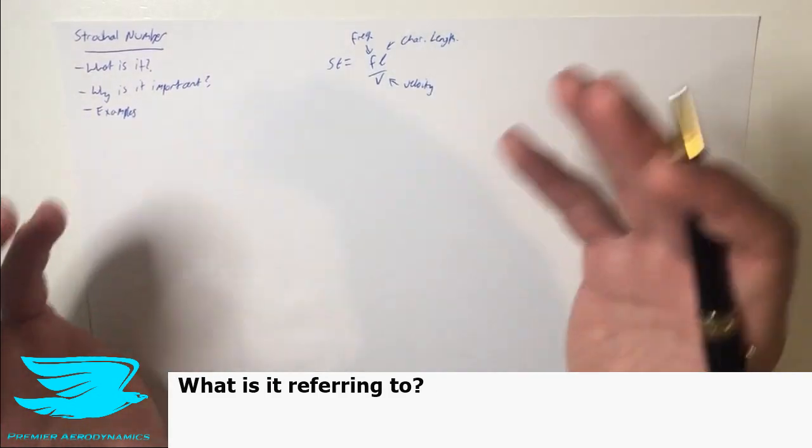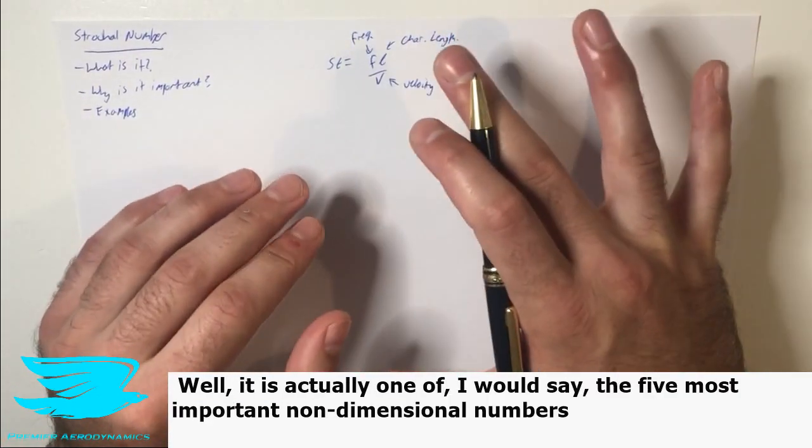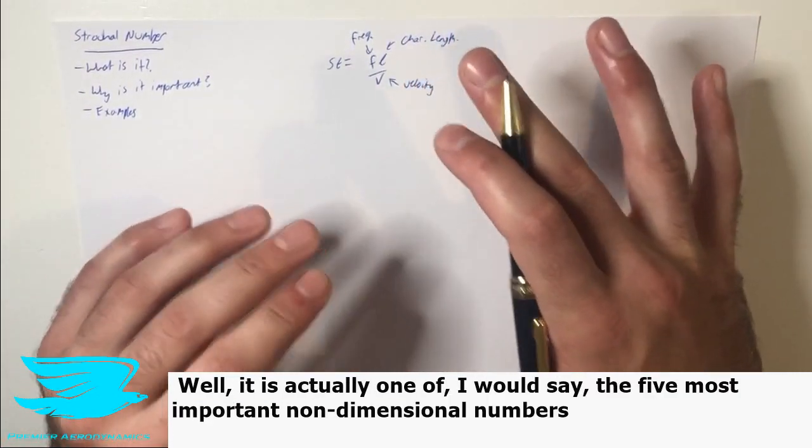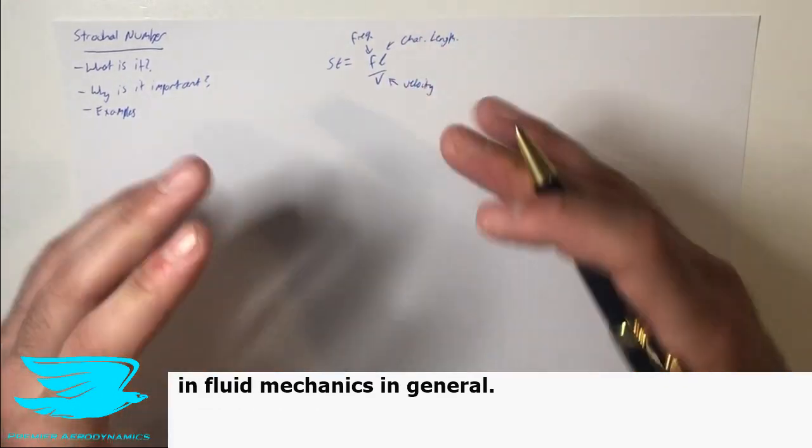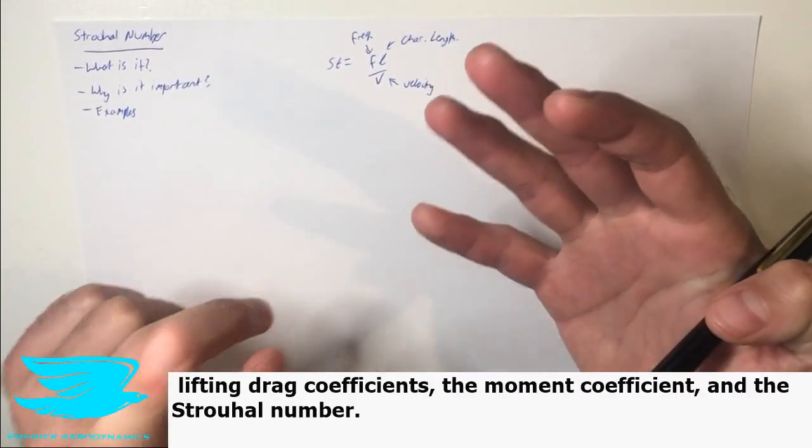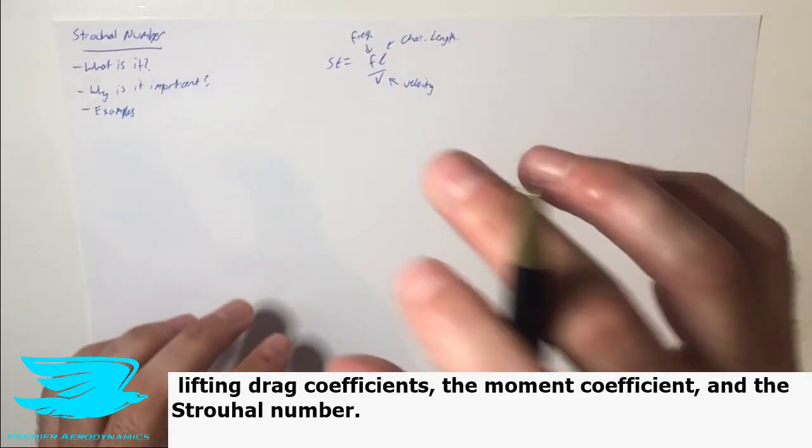So what is this number? What does it refer to? Well, it's actually one of, I would say, the five most important non-dimensional numbers in fluid mechanics in general. The others being, for example, the Reynolds number, lift and drag coefficients, the moment coefficient, and the Strouhal number.